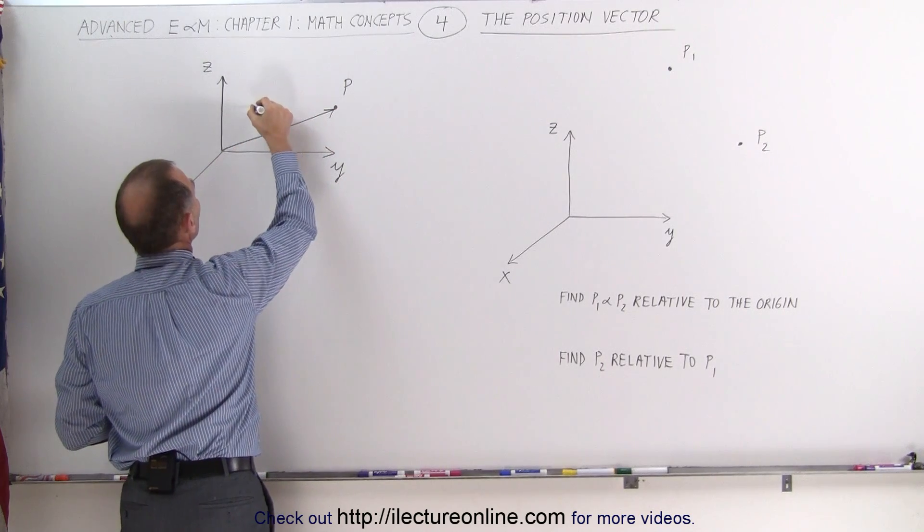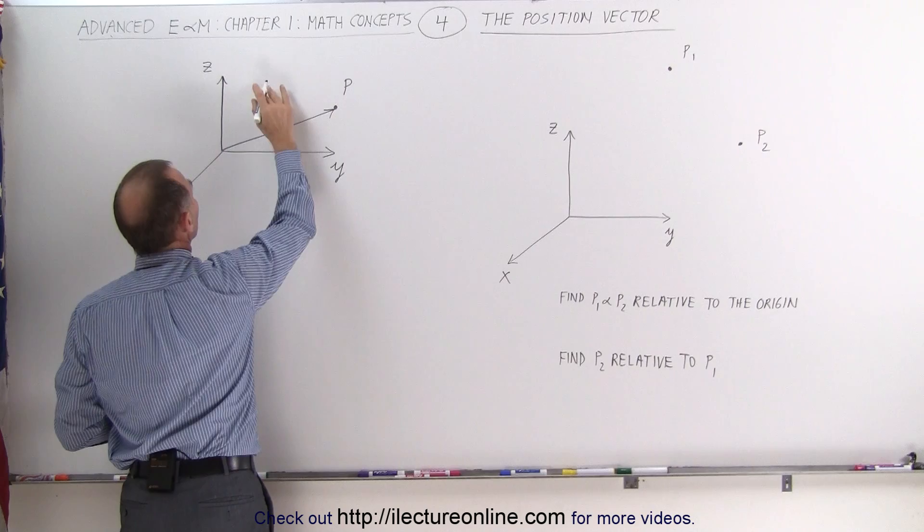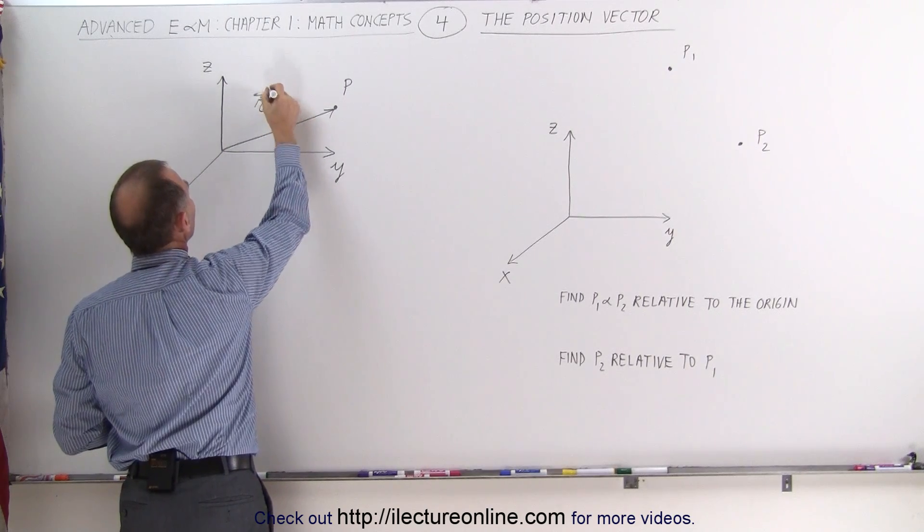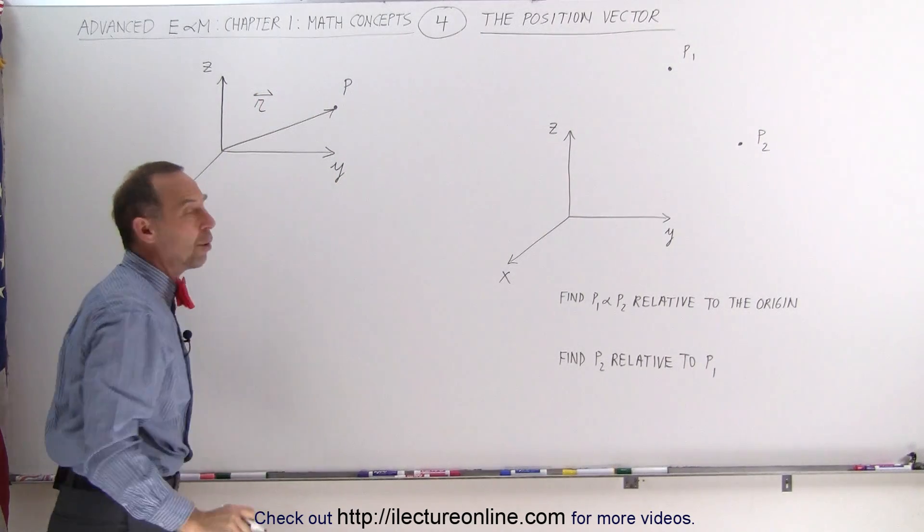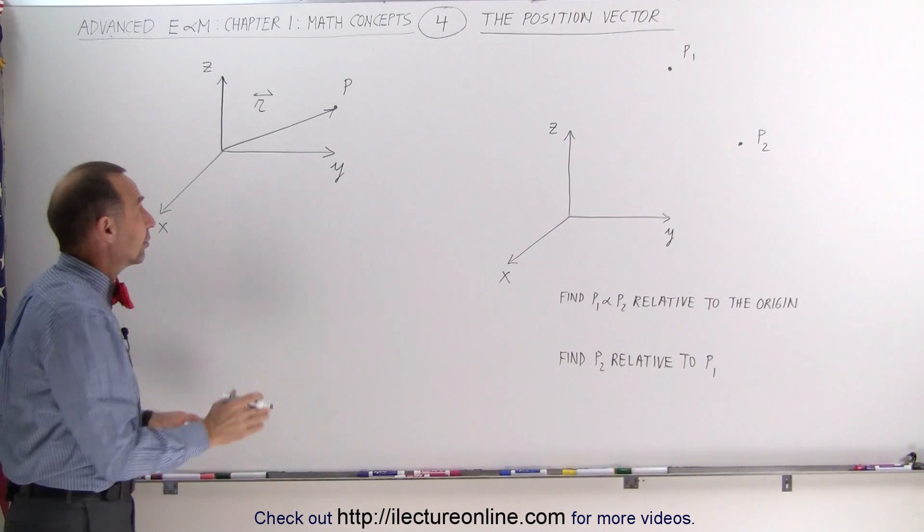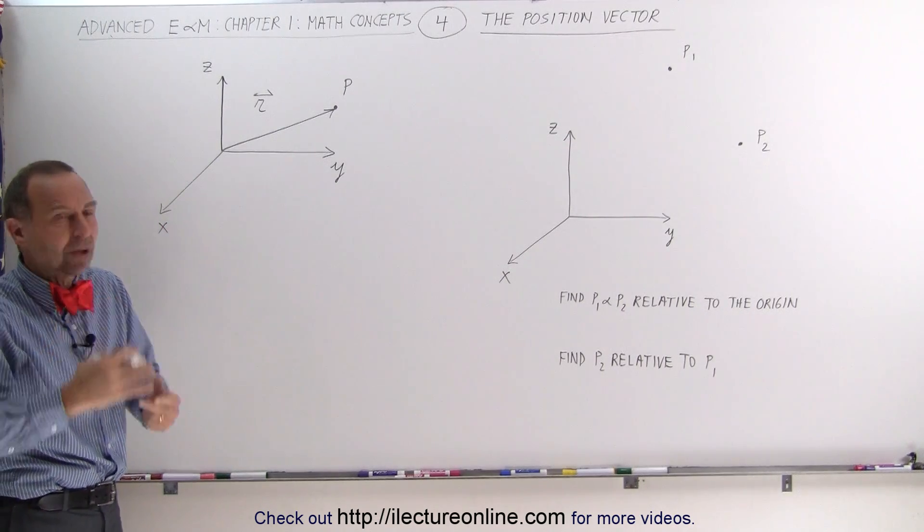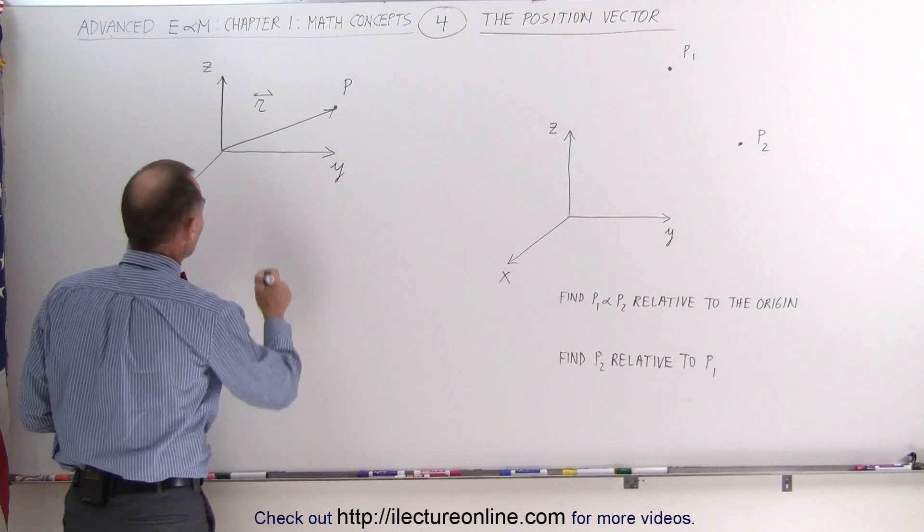The letter that we use is the small letter r, and we need to put an arrow on top of that. And there's our position vector to that point. If we want to define the vector, it'll have an x, a y, and a z component in the x, y, z Cartesian coordinate system.